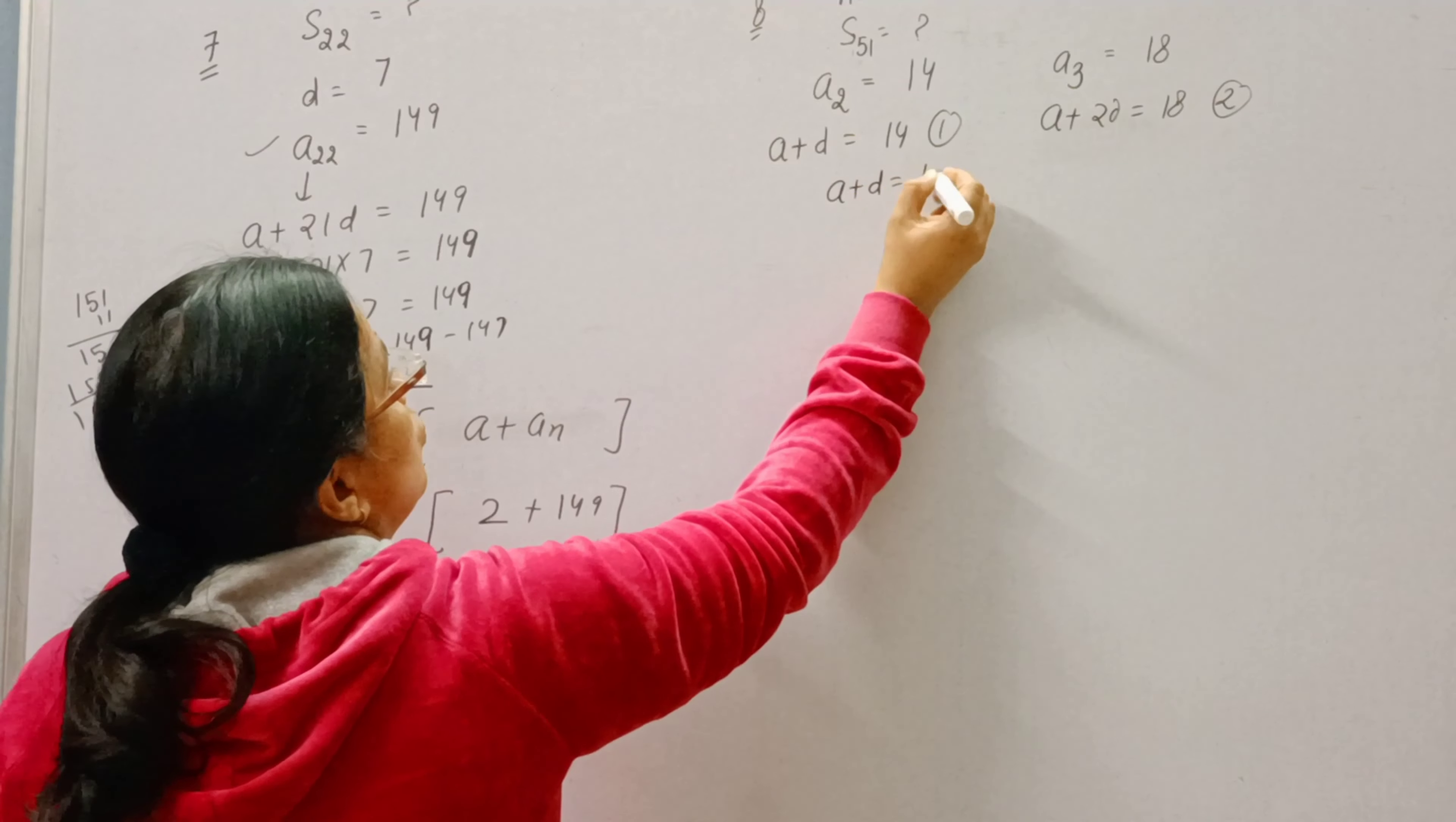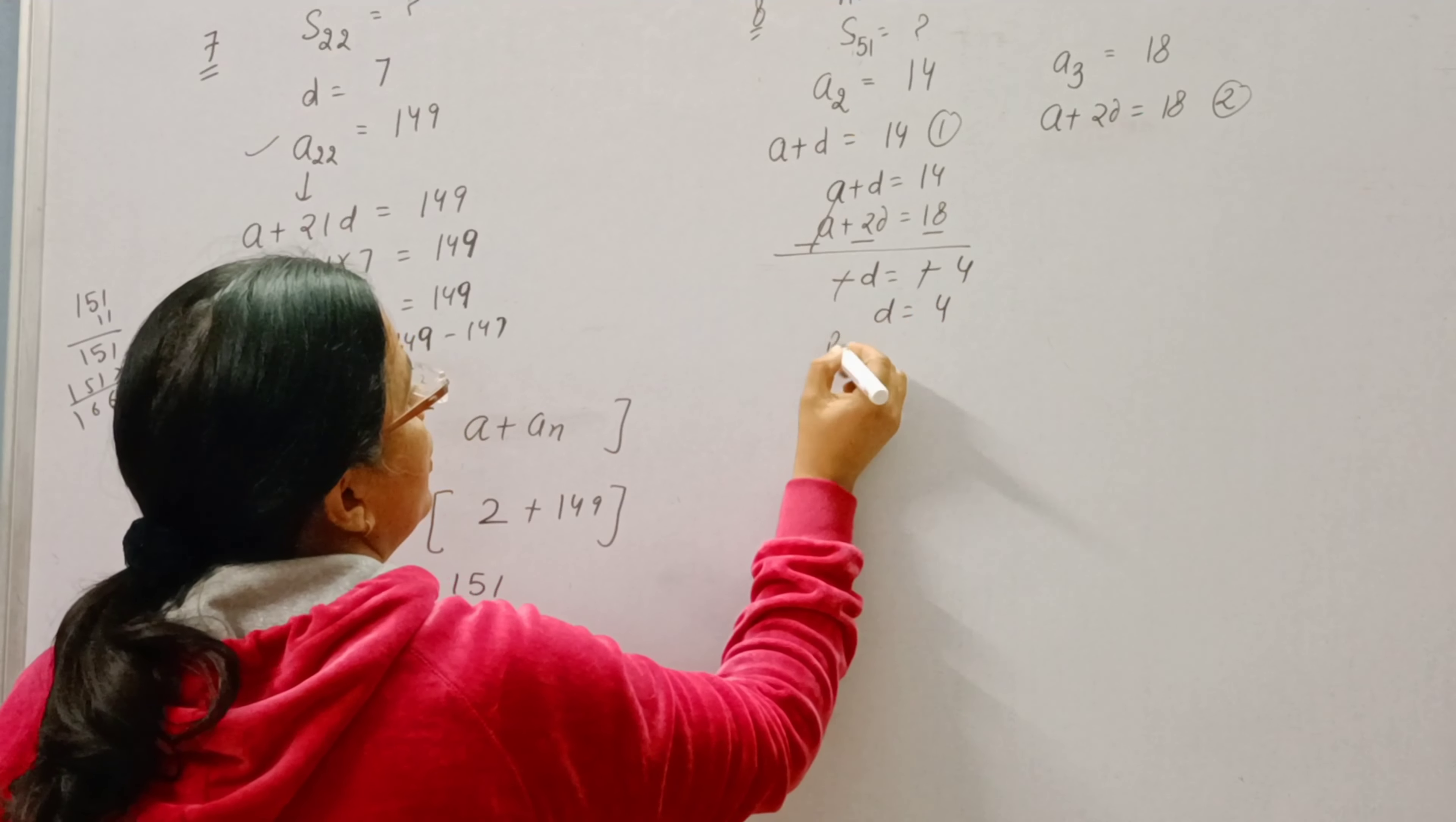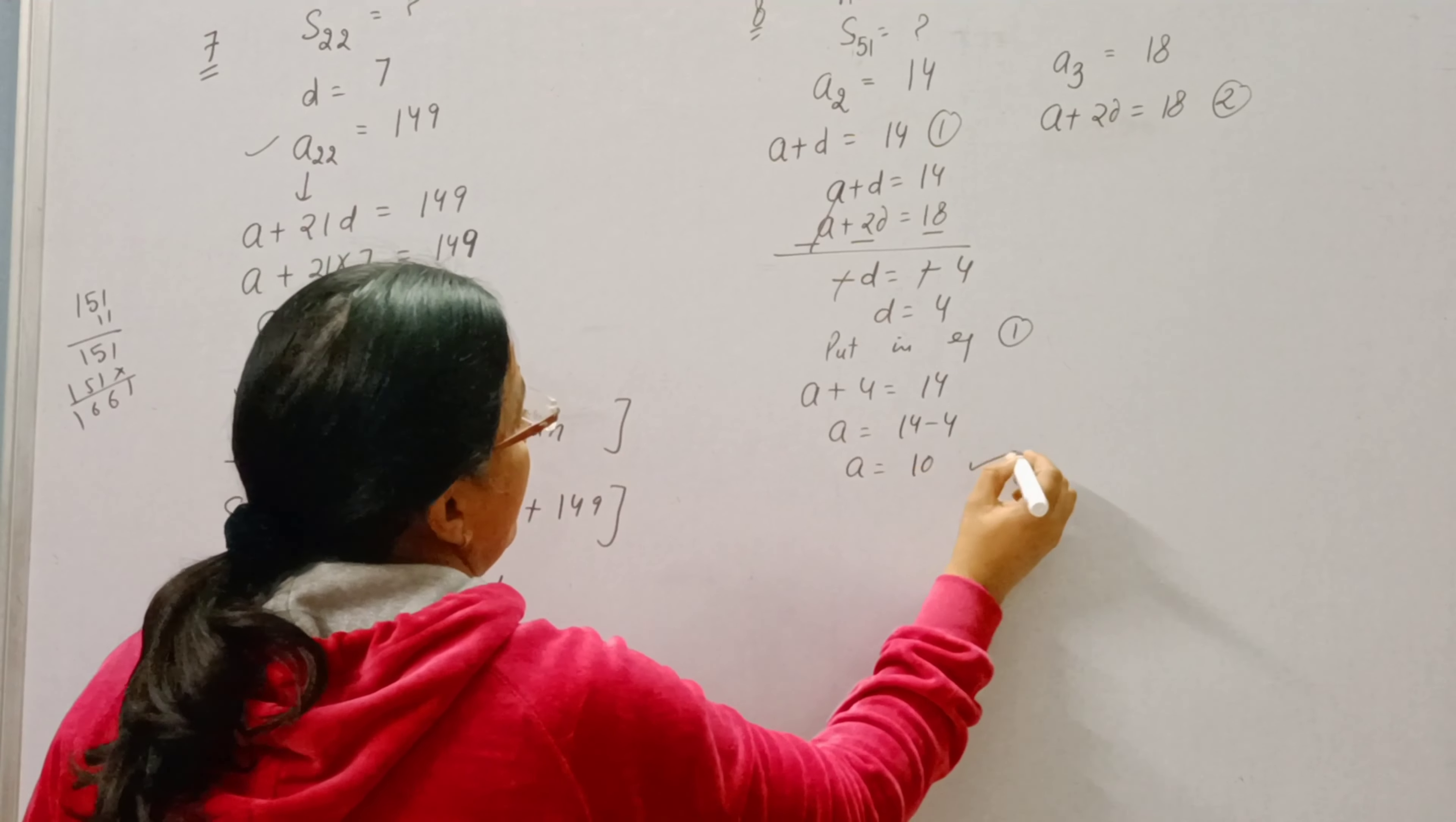Now we can solve these two equations by the method of elimination and then we can find the value of A and D. So D is 4. Put the value of D in equation 1. A plus 4 is equal to 14. A will come 14 minus 4 is equal to 10.